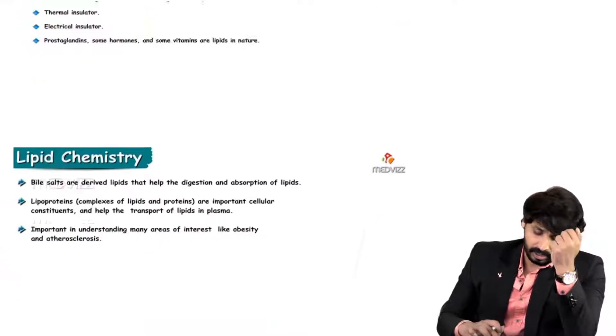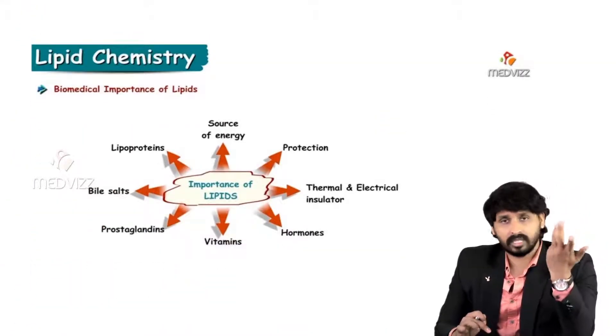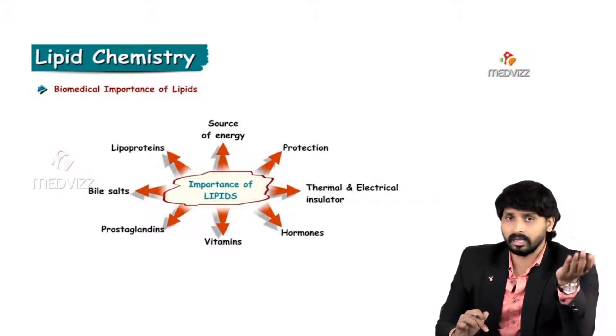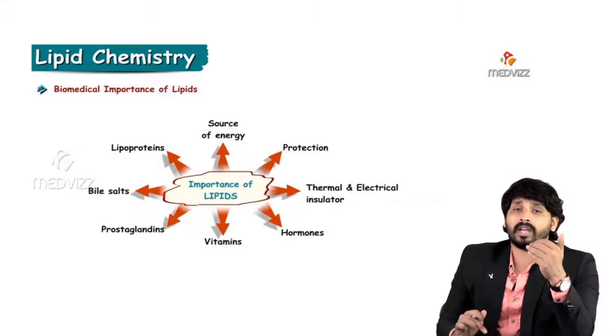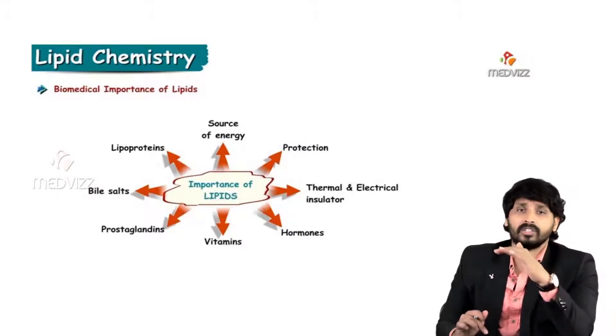In this picture, I have summarized all the functions. The first line of function is source of energy, and second is protection of particular organs by making a paddy layer over those organs. Third is thermal and electrical insulator, and hormones such as sex hormones and adrenal hormones—they are all lipid in nature. Testosterone, estrogen, progesterone, all these hormones are lipid in nature.